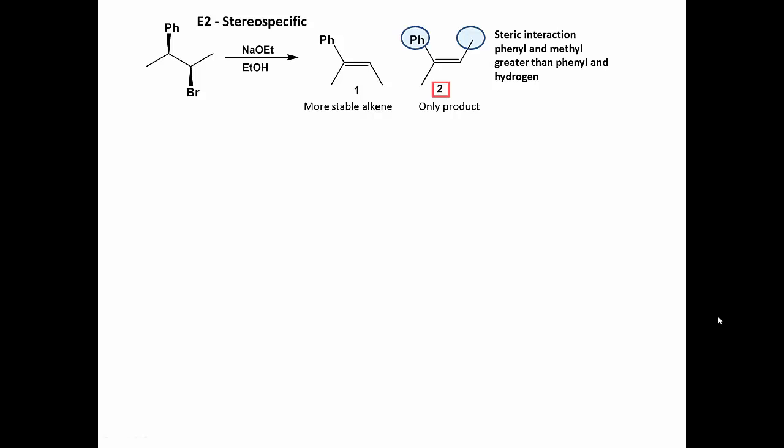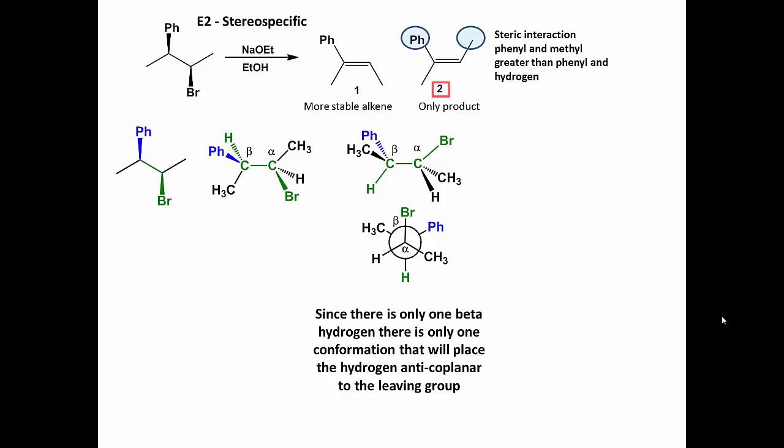Why is the least stable alkene produced? First, we draw the structure as dashed and wedged drawings to clearly show the stereochemistry of the substrate. We now know the hydrogen and the leaving group have to be anti-coplanar. Since there is only one beta proton, there is only one configuration that places the hydrogen anti-coplanar to the leaving group.